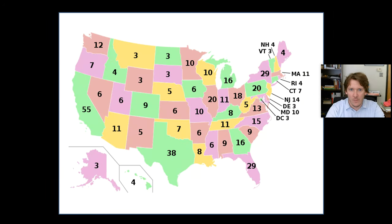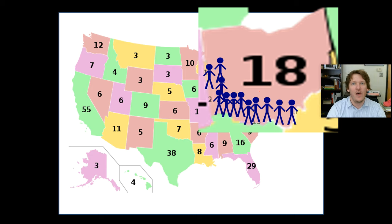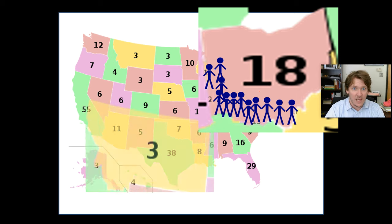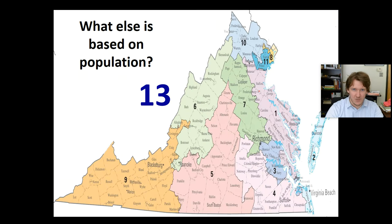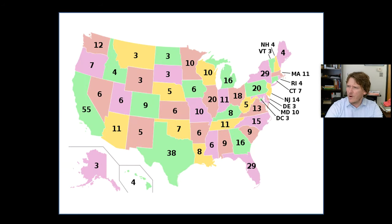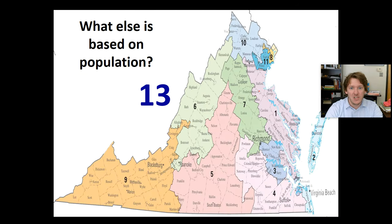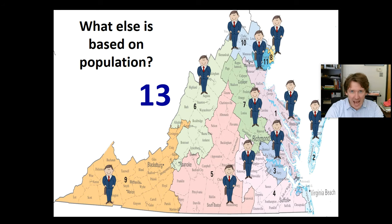Each state is worth a different amount of points, and we already talked about where those come from — it's population-based. Ohio is worth 18 points. Basically, for every 700,000 people, you get one point. If your state has very few people, you don't get very many points. What else is population-based? The number of representatives you have in Congress — every 700,000 people means one electoral vote, and every 700,000 people means one representative in Congress.